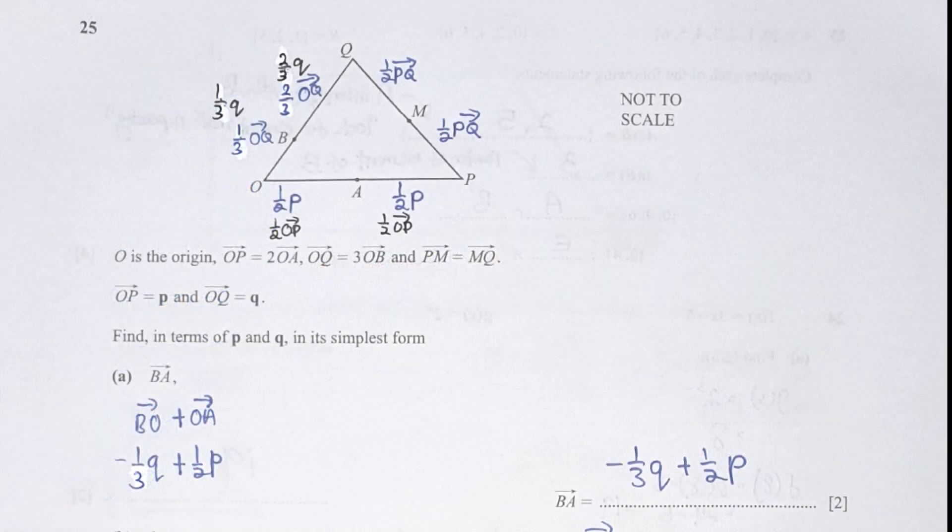As for question 25 here, I basically fill up all the information that I've gotten. So the statement OP equals to P equals to 2 OA. This one indicates that OA is actually half of OP and AP is also half of OP which directly translates into the results of 1 over 2P and 1 over 2P respectively. However, for the next statement, we have OQ equals to 3 OB and OQ equals to Q. So this one indicates that OB is 1 over 3 of OQ and BQ equals to 2 over 3 of OQ. Which directly translates into 1 over 3Q and 2 over 3Q respectively. And last part PM equals to MQ. This one indicates that PM is actually half of PQ and MQ is also half of PQ. Based on all this information, we can now proceed with the calculation of part A.